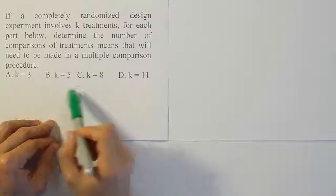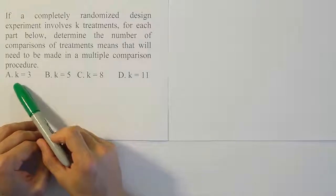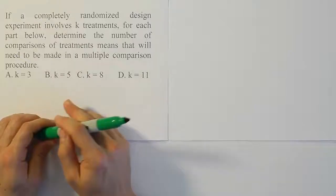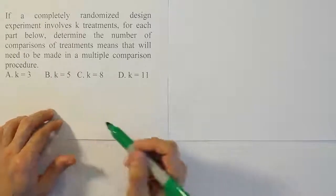You have parts A, B, C, and D. All they do is give us a different number of treatments, and we have to figure out how many multiple comparison procedures are needed under those scenarios.